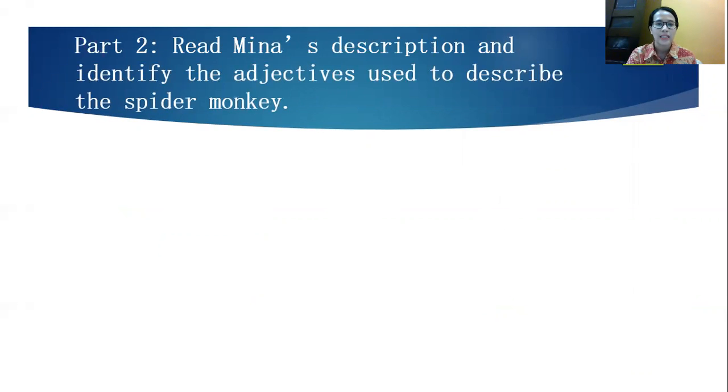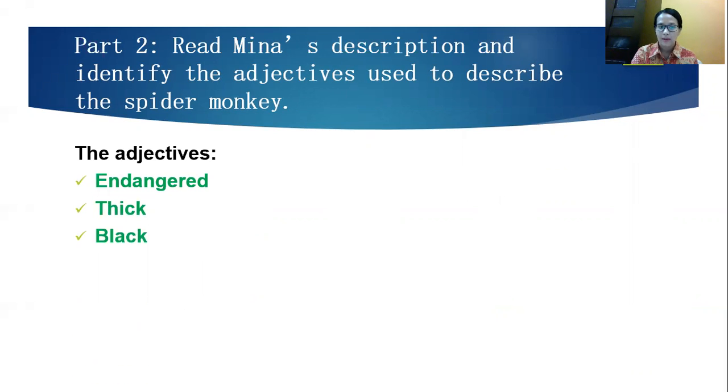That are the five details or five parts that are described about the spider monkey. Now, from the information before, we can find out also the adjectives that Nina used to describe the spider monkey. What we have found are endangered, thick, black, brown, red, talking about color, long, the size, diurnal, nocturnal, and sociable.